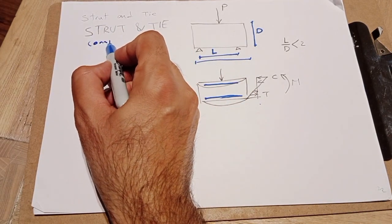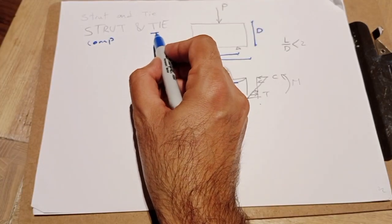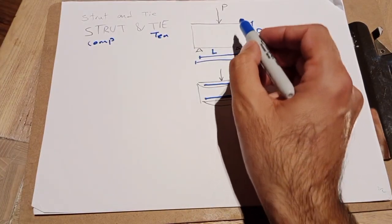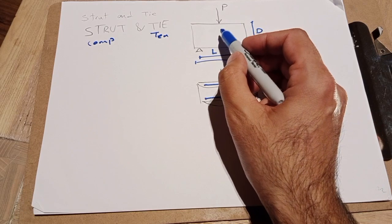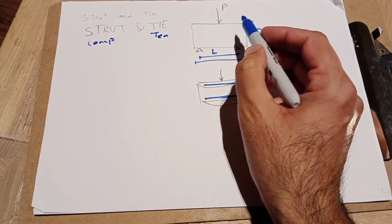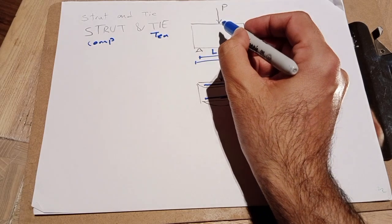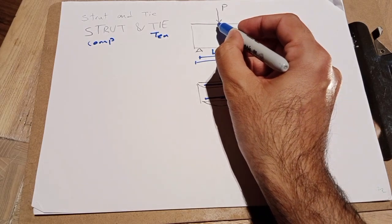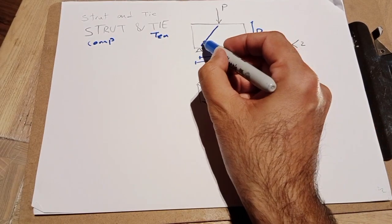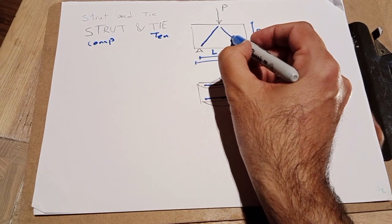Strut means the member in compression and tie means the member in tension. So we need to define where there is tension and where there is compression in this beam. Strut and tie applies this type of loading.